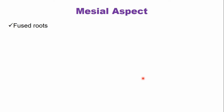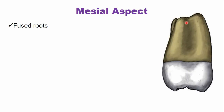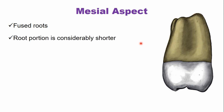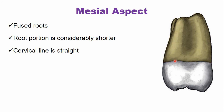From the mesial aspect, the roots are fused and appear as a single large root. The root proportion is considerably shorter compared to the maxillary first and second molars, in which root length is larger relative to the crown. On the third molar, the cervical line on the mesial side is nearly straight. The two visible cusps are the mesial buccal cusp and the single large lingual cusp.